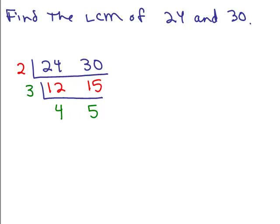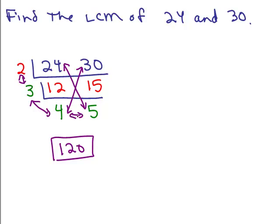So here's how it works. You take the numbers catty corner. You could either do 24 times 5, or you could do 30 times 4. Now, which is easier? I think 30 times 4, the answer is 120. That's the least common multiple. But if you did 24 times 5, you would also get 120. Or if you multiplied all these numbers on the outside, 2 times 3 times 4 times 5, if you multiplied all those numbers together, you would also get 120.